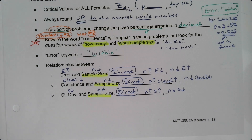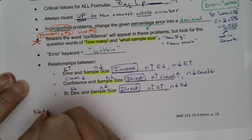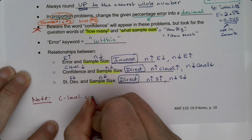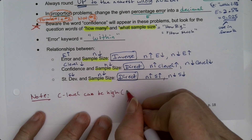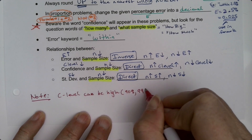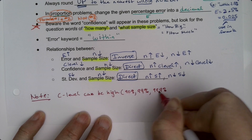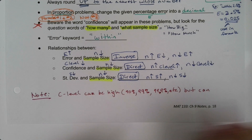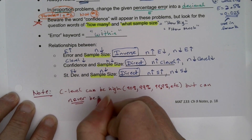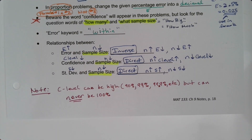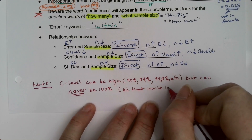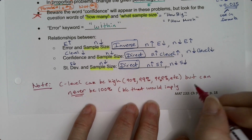One final note: your confidence level can be high — 90%, 95%, 99%, 99.9%, and so on — but it can never be 100%. A 100% confidence level would imply that you surveyed the whole population with no doubt whatsoever. In that case there would be no point in constructing a confidence interval because you'd already know exactly what everyone thinks.